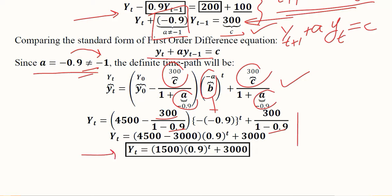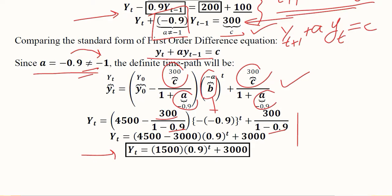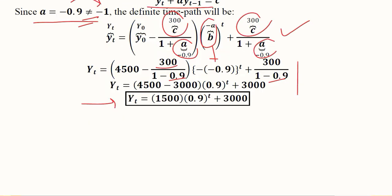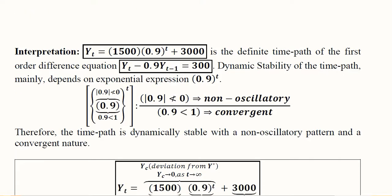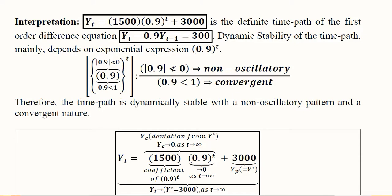This is the time path of the national income with the lagged dependence in this case. We can interpret it as we usually interpret the time path of a first-order difference equation. This is the given equation that we developed by using the expenditure approach of national income.